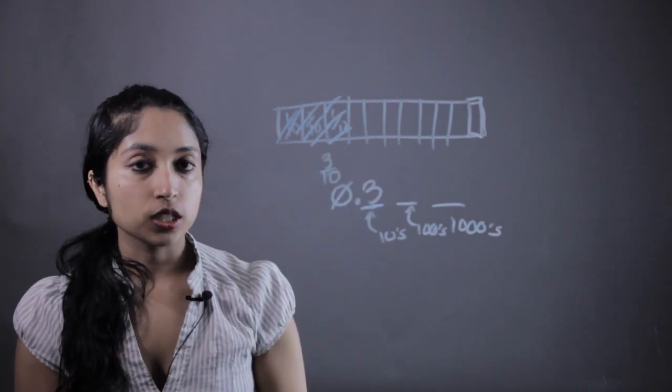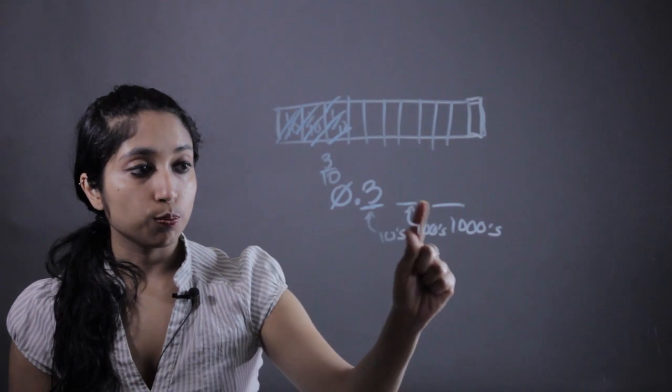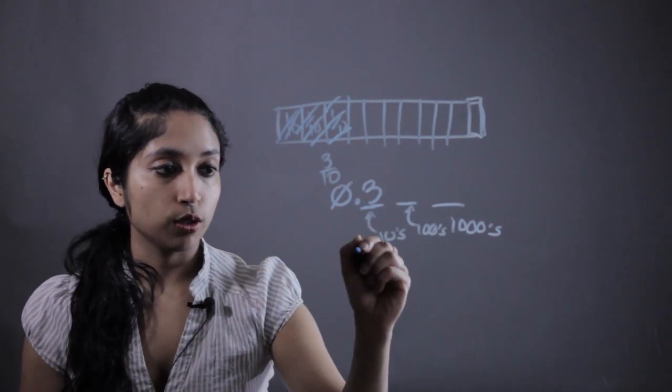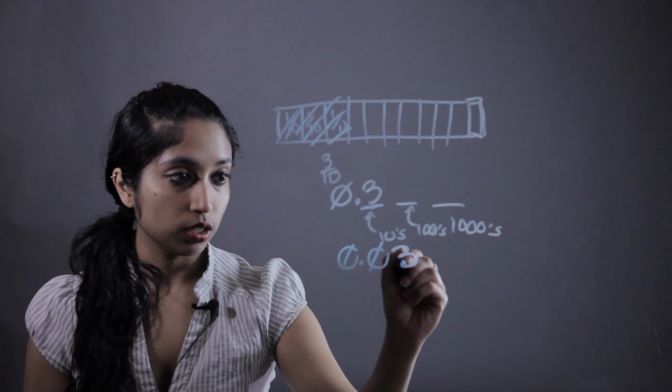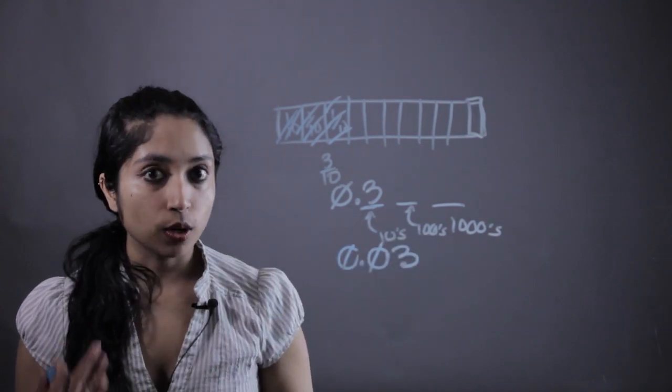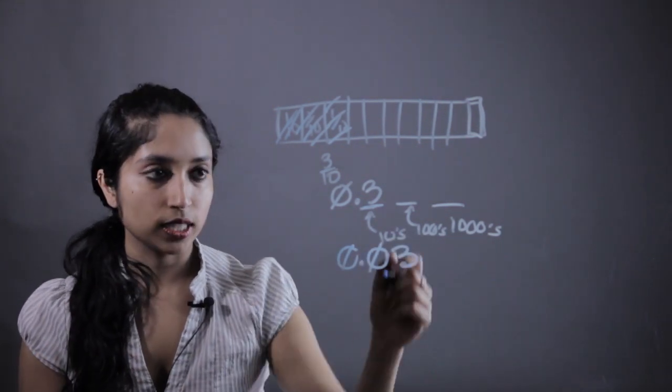Now the reason I want to use fraction strips is because if we were to put something in the hundreds place, say we have zero point zero three. Now you might think, oh, hundred, that's bigger than ten, but of course that's not the case.